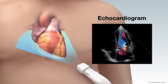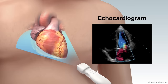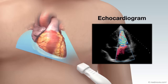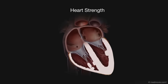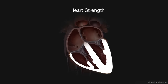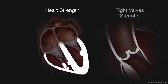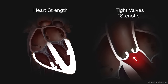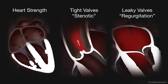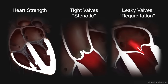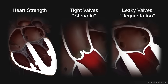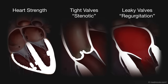Blood flow is recorded with a technique called color Doppler. The echocardiogram shows the strength of the heart muscle squeeze, and if any of your heart valves are too tight — stenotic — or too leaky — regurgitation. This information helps your physician choose an appropriate treatment.